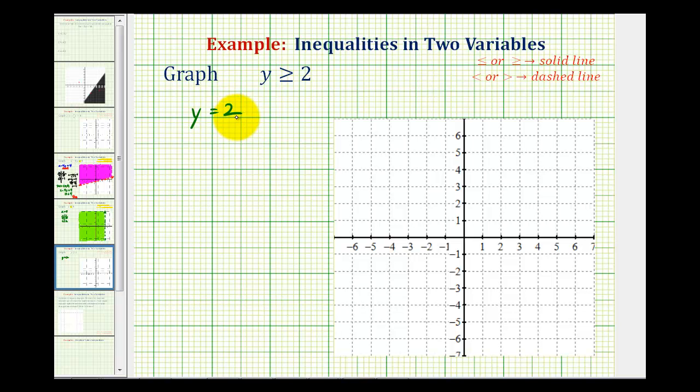Before we do this, we need to check to see if the line is going to be solid or dashed based upon the original inequality symbol. Here we have greater than or equal to, and because of the equal part, we're going to make a solid line because the line is going to be part of the solution. If the inequality symbol was less than or greater than, we'd have a dashed line because the line would not be part of the solution.